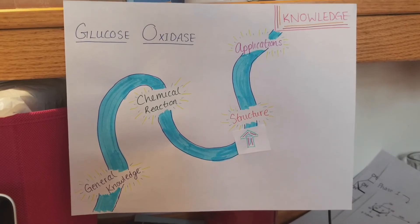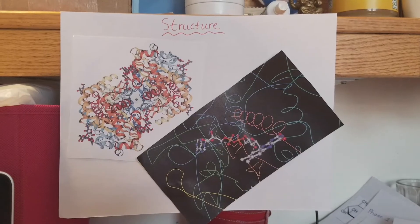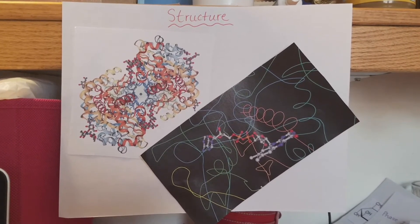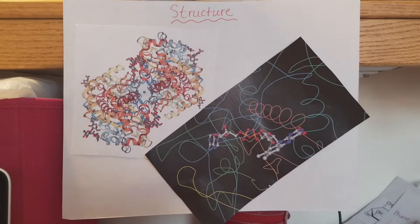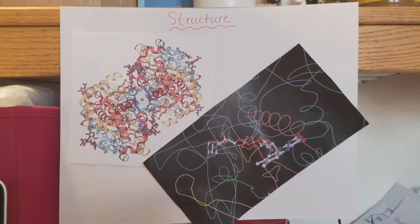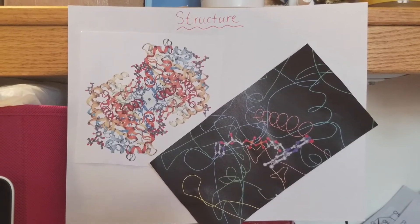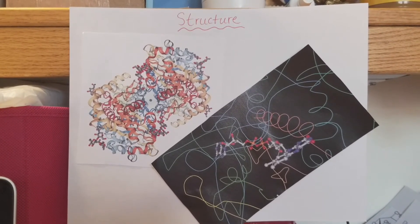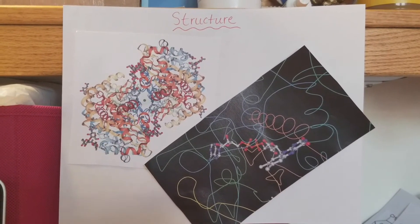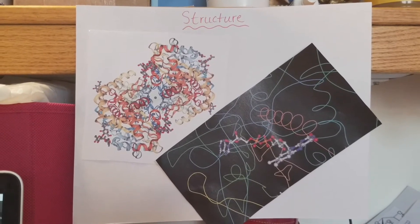Now that we've learned about the chemical reaction, let's go into the structure. Glucose oxidase is a dimeric glycoprotein with sugars covalently attached, mainly consisting of mannose and sucrose. The protein consists of alpha helices and a couple of beta turns. What's cool about this enzyme is that it consists of identical dimeric subunits, each one having their own FAD cofactor. This image shows the line of symmetry, which is the green point in the middle, and the substrate beta glucose also binds symmetrically.